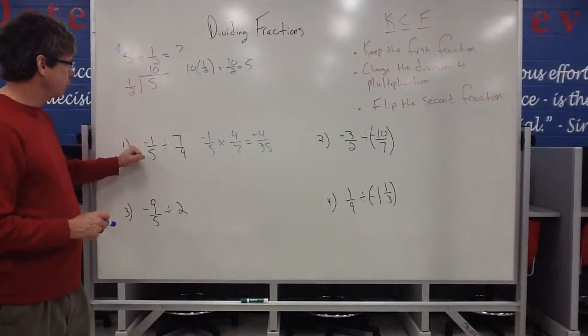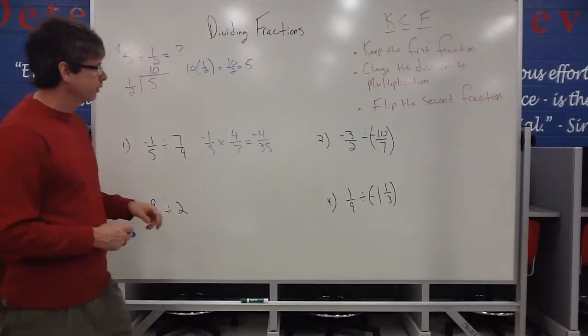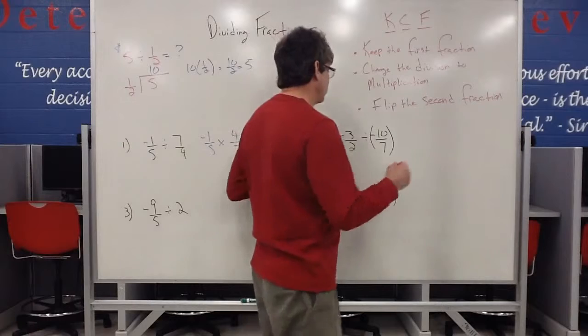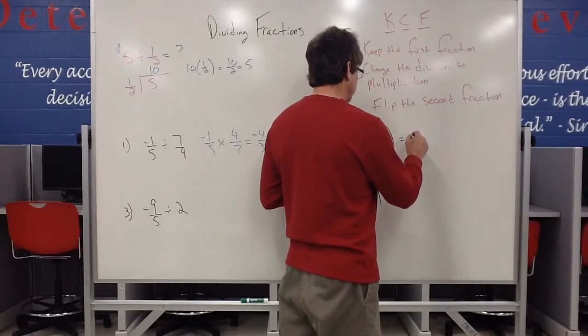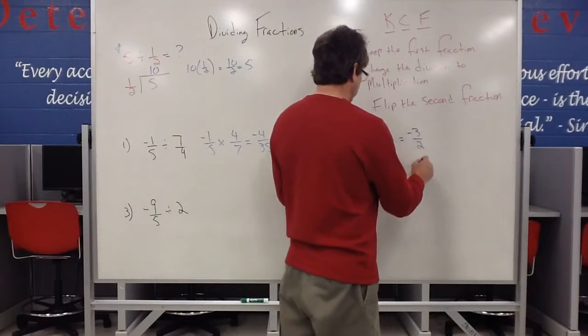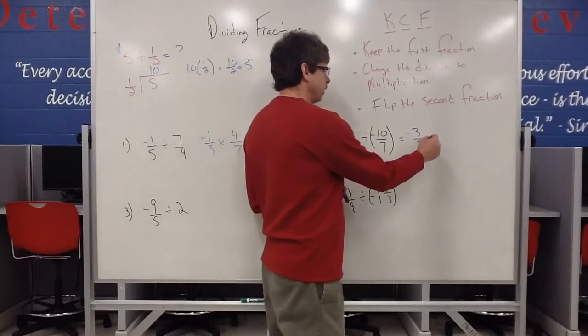So that's a nice little strategy to divide fractions. So if I have negative three halves divided by negative ten-sevenths, what I can do is keep the negative three halves, change division to multiplication,